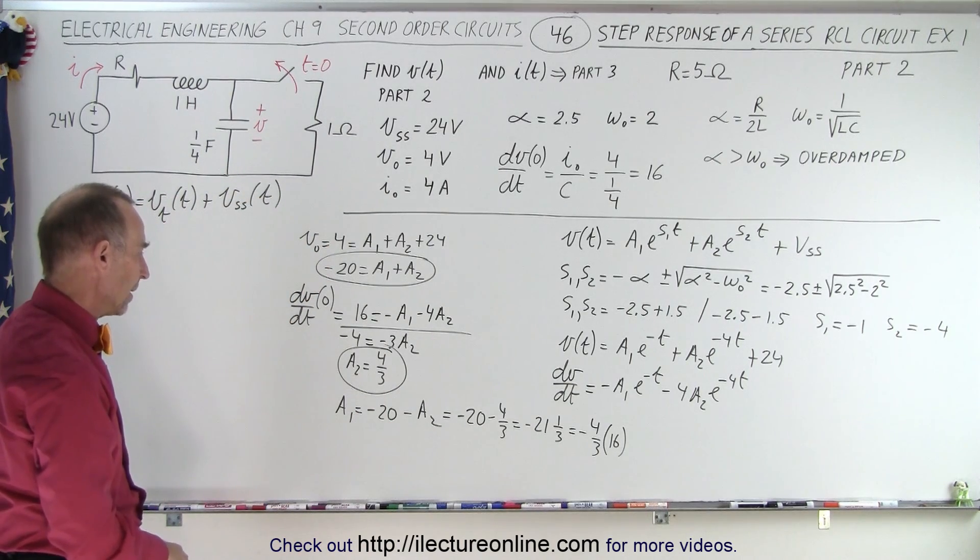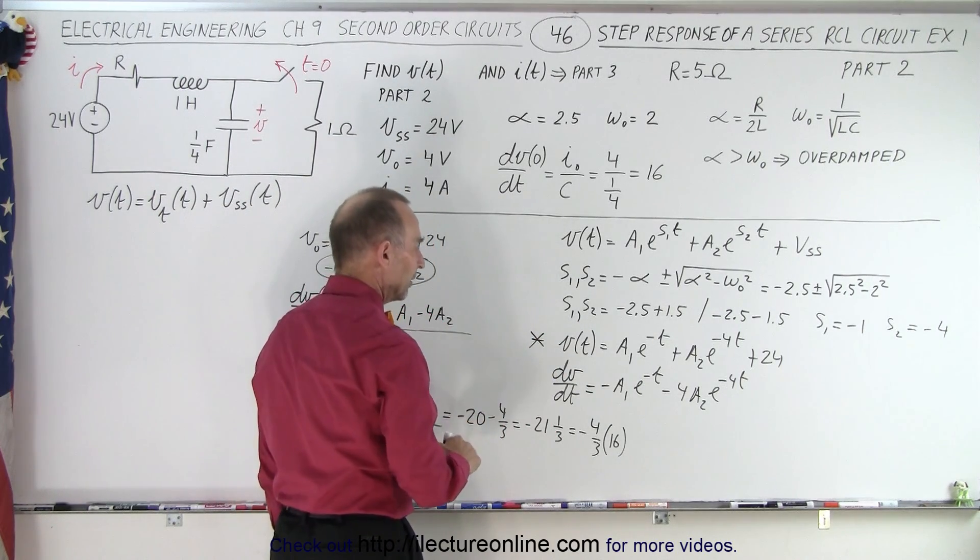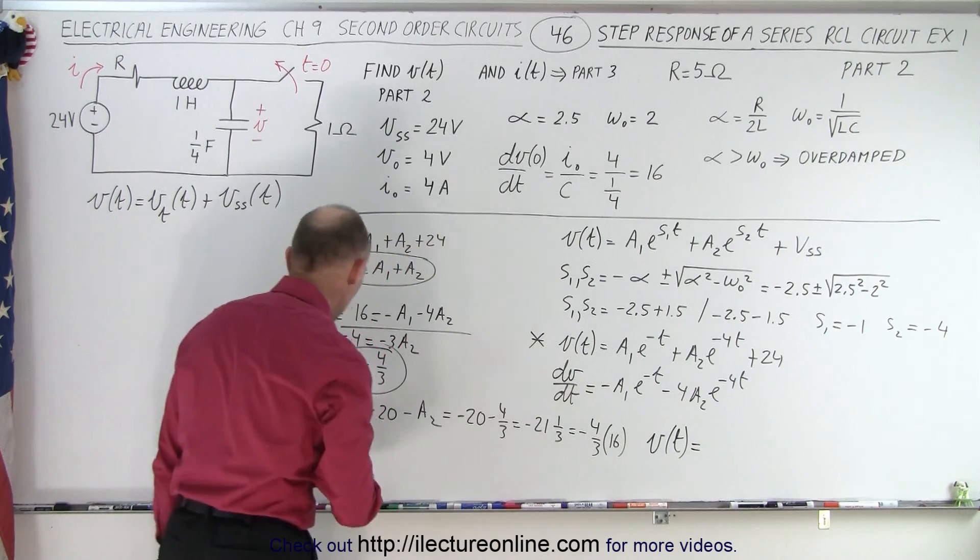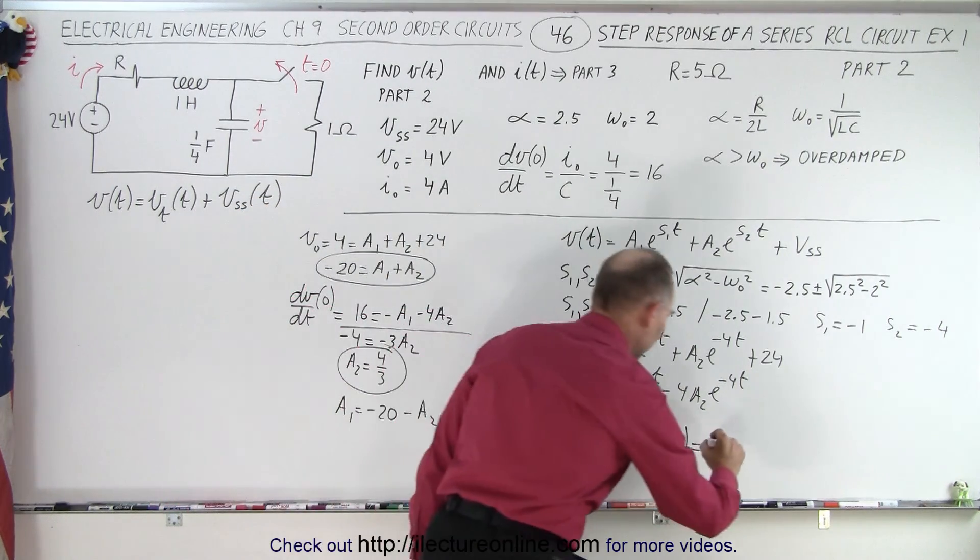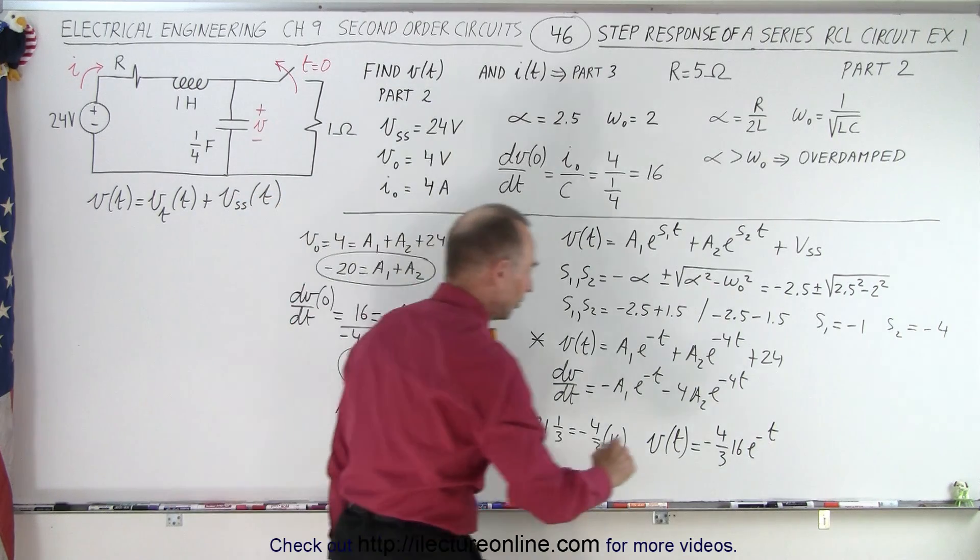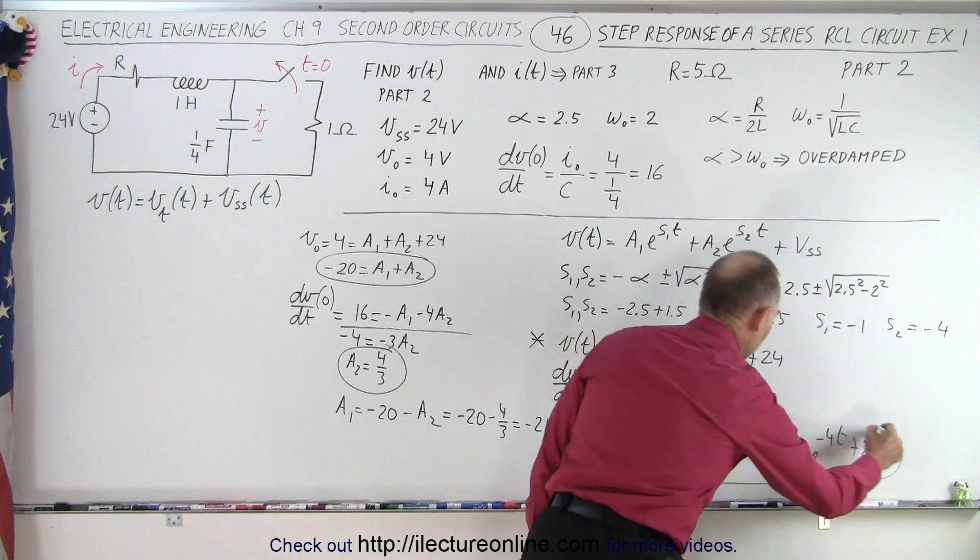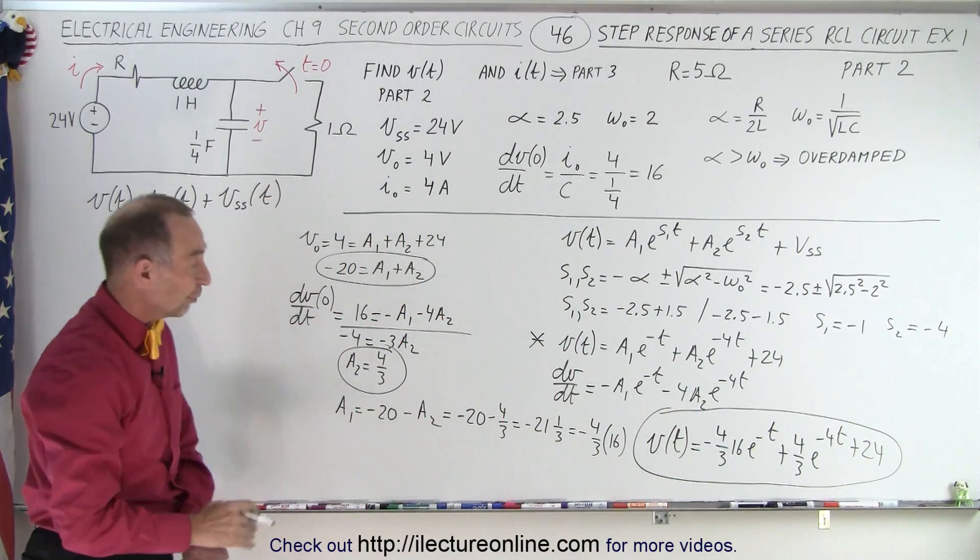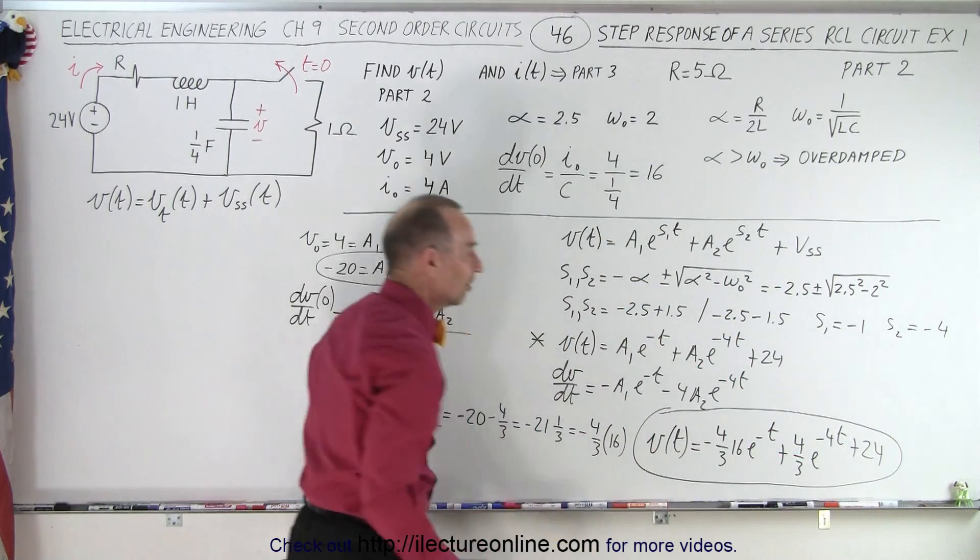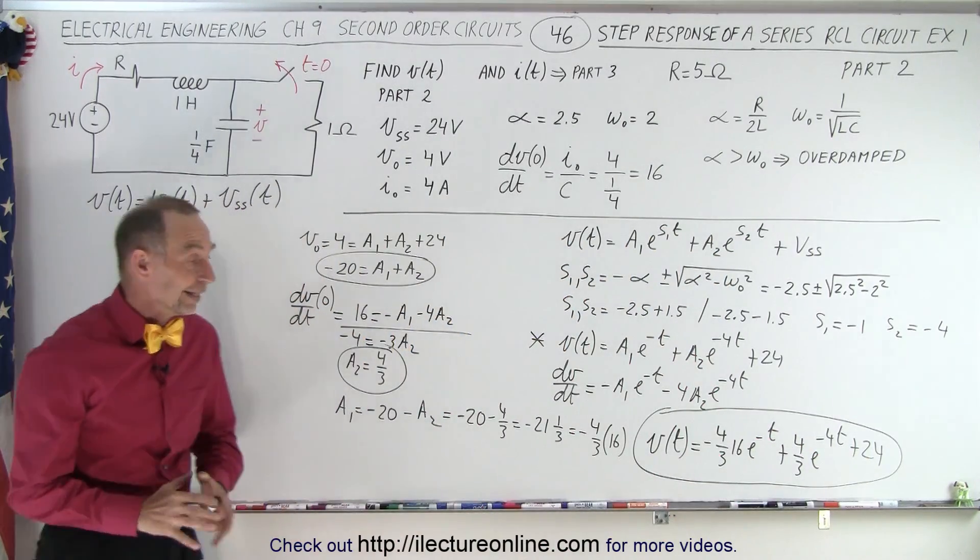So now we have A1, we have A2. We can now plug those into our equation right here. So when we rewrite that, now we can say that V of T, the voltage with respect to time, is equal to A1, which is minus 4 thirds times 16 E to the minus T, plus A2 which is 4 thirds E to the minus 4T plus the steady state voltage of 24. And here, we now have the equation of the voltage with respect to time of the circuit we have over here, which means that this is the transient portion of the voltage, and this here is the steady state portion of the voltage. And of course, when T becomes very large, both of these will go to zero, and we're left with just a steady state voltage. And that is how it's done.